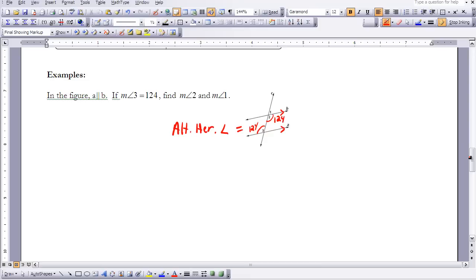So if angle two is 124 also, I have what's called a linear pair with angle one and angle two. So I can say 180 minus 124 would equal the measure of angle one. So if I do the arithmetic here, then I know the measure of angle one is 56 degrees.